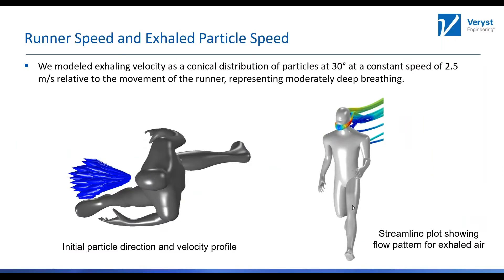For the particle tracing, we looked at the exhaled particles from the front runner. We assume a 30% conical angle, as shown in the figure on the left, at a slightly higher velocity than the runner. Those numbers represent relatively deep breathing, not coughing or sneezing. The figure on the right shows how these streamlines originating at the mouth behave — they go right behind the runner because of the running speed, unlike other analyses where they move forward further.